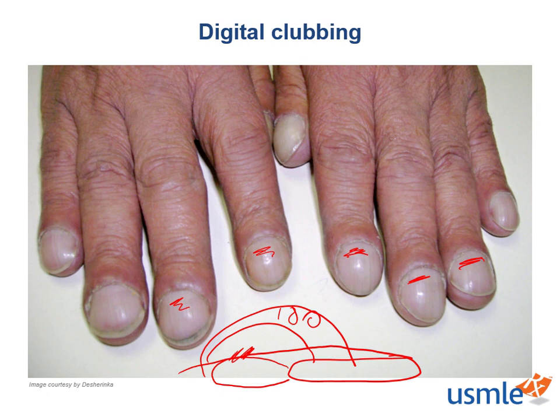Some characteristics you need to recognize for digital clubbing: as the angle gets larger, the nail starts moving more freely. You'll notice a characteristic spongy sensation — as you press on the nail, it feels easily movable. This sponginess is caused by increased fibrovascular tissue between the nail and the finger underneath. The skin at the base of the nail may also be smooth and shiny. The key things to remember are: greater than 180 degrees and sponginess.